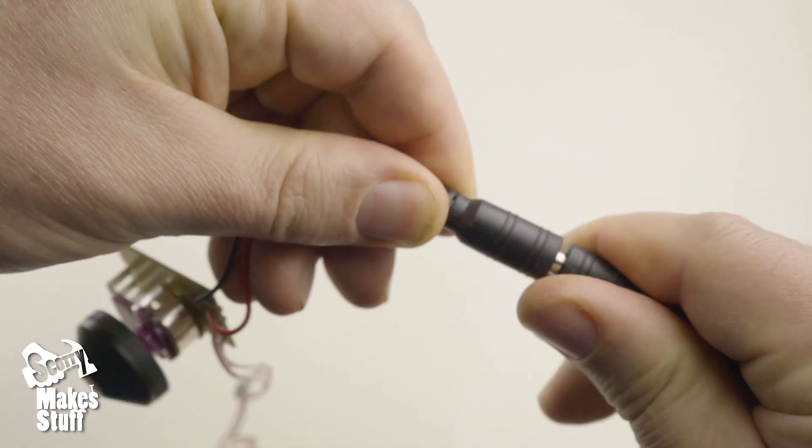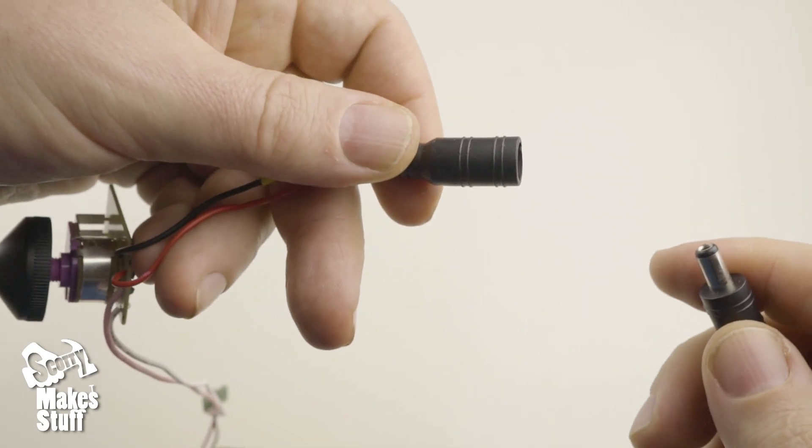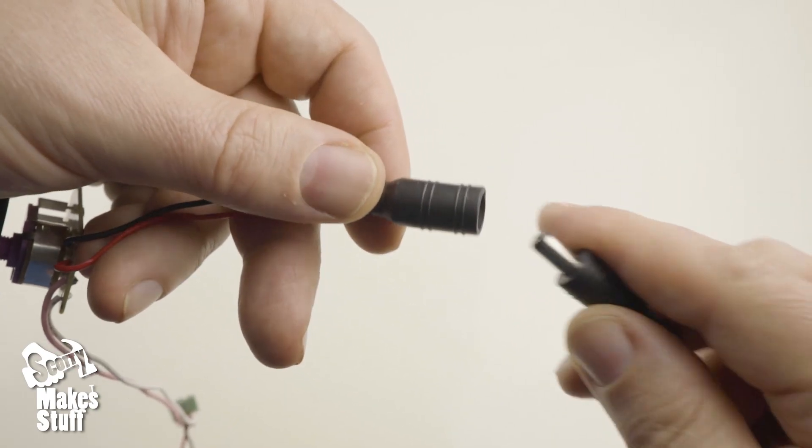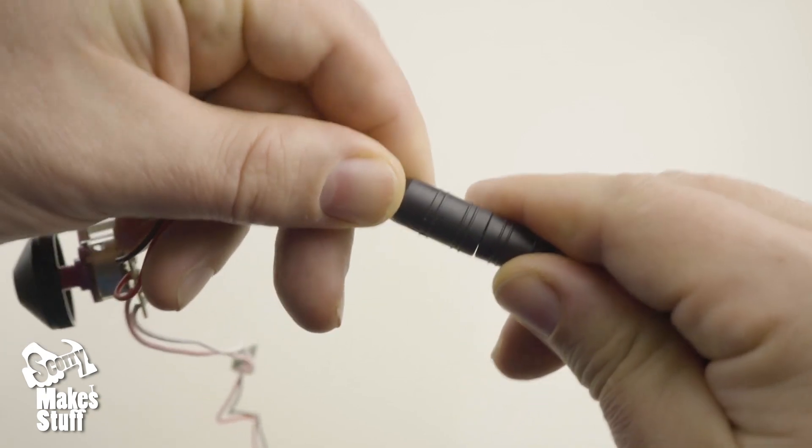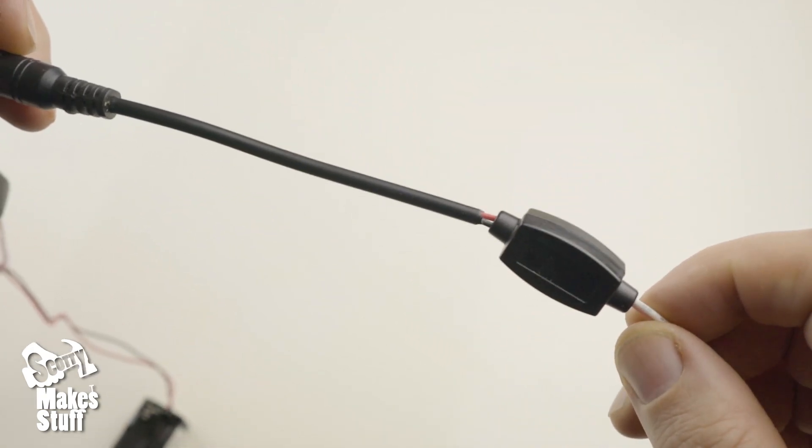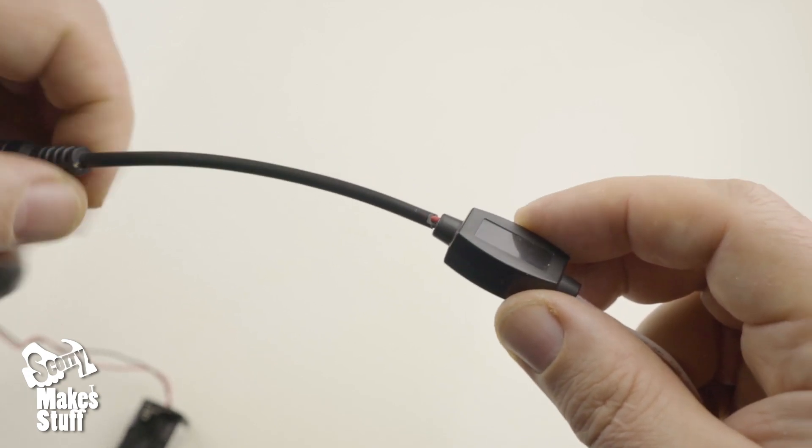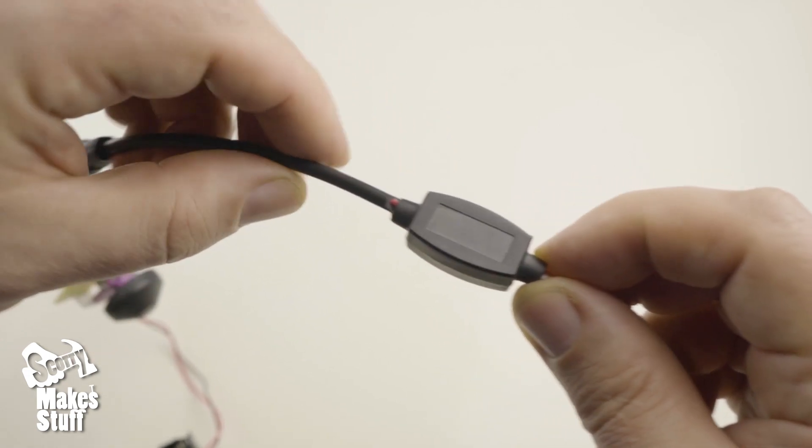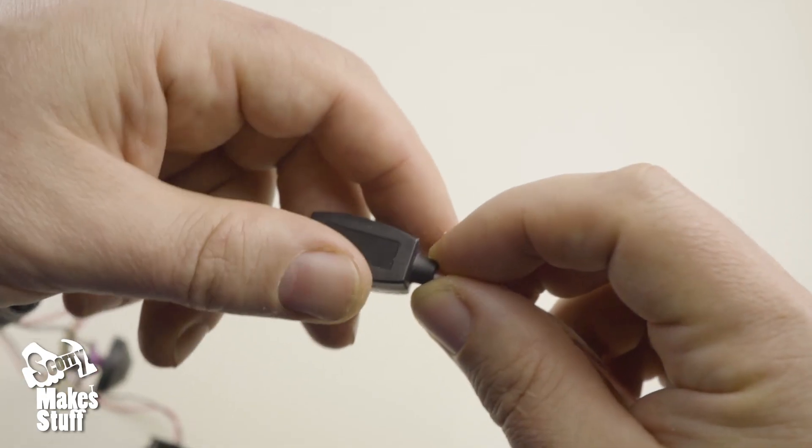Now this then attaches to the other side that we desoldered from the dimmer and that solders directly to the positive and negative on the voltage regulator for the LED.